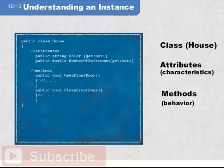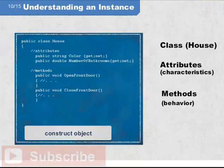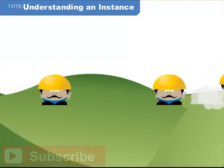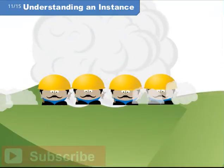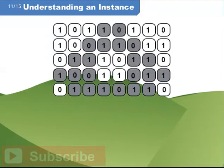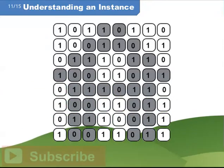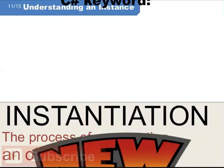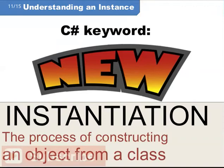Remember, this class is only a blueprint — it is not yet real. To turn a class into an object, we write code that instructs the computer to construct an object in memory. In C#, the new keyword is that instruction. Of course, there is no team of construction workers and the house object is not created in the physical world. The computer instead creates the house object in memory, allowing the programmer to write code to interact with it. Programmers have a term for this exact thing: instantiation. Instantiation is the process of constructing an object from a class, in C#, using the new keyword.